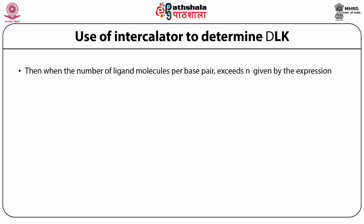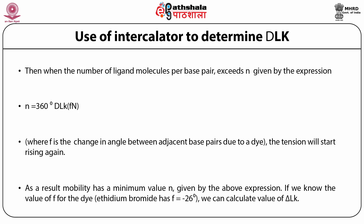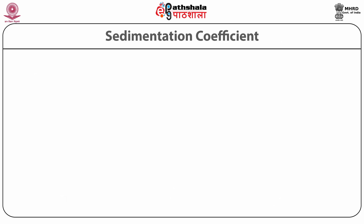When the number of ligand molecules per base pair exceeds ν given by the expression ν = 360° × delta LK / φ × N, where φ is the change of angle between adjacent base pairs due to the dye, the tension will start rising again. As a result, mobility has a minimum value ν given by the above expression. If we know the value of φ for the dye — for example, ethidium bromide has φ equal to minus 26 degrees — we can calculate the value of delta LK.